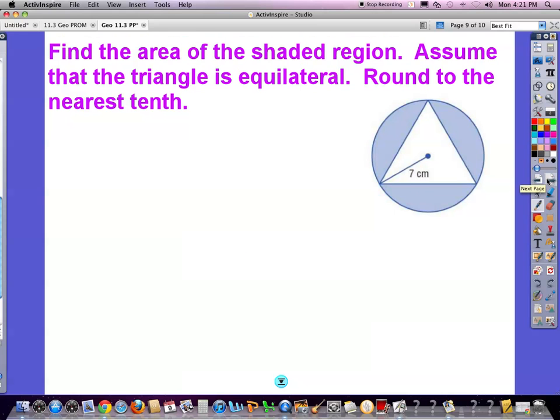Moving right along. Find the area of the shaded region. Assume that the triangle is equilateral, round to the nearest tenth. So to figure this out, you're going to take the area of the circle and you're going to subtract the area of the triangle. You may be thinking, triangle is one-half base times height - I don't have the base, I don't have the height. We're going to have to use one-half a p.